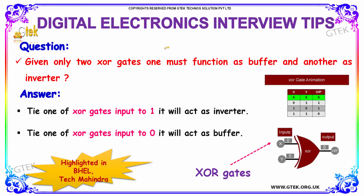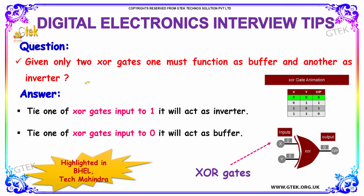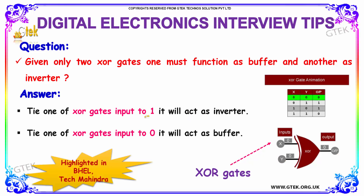The question is: given only two XOR gates, one must function as a buffer and another as an inverter. The answer is: tie one of the XOR gate's inputs to 1 and it will act as the inverter. Tie one of the XOR gate's inputs to 0 and it will act as a buffer.